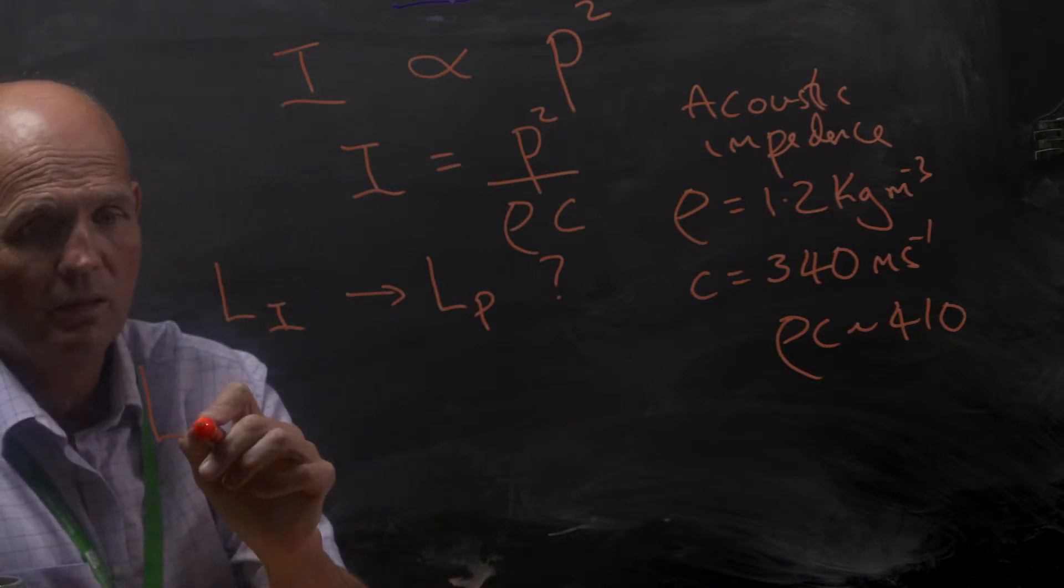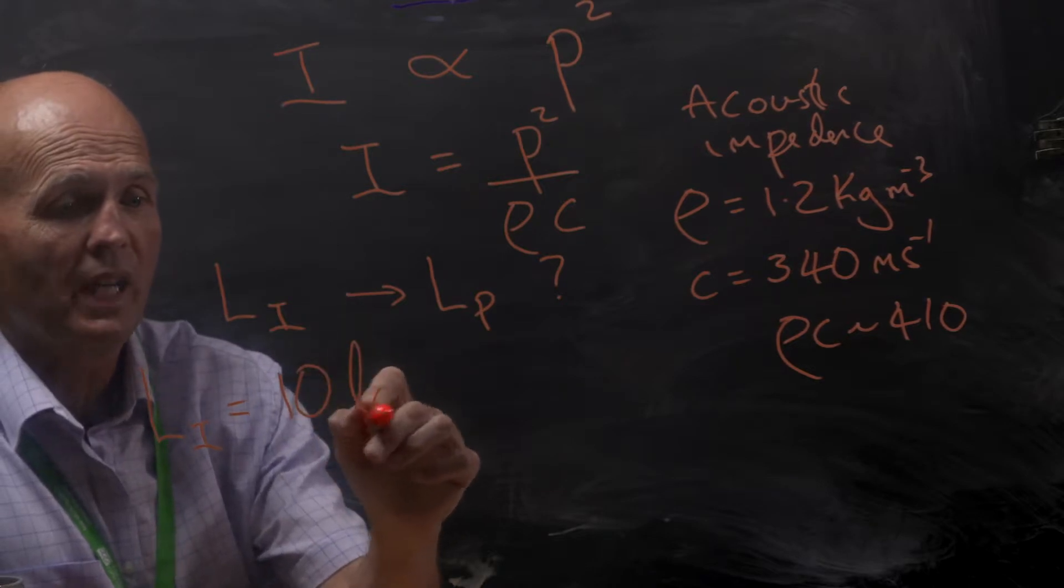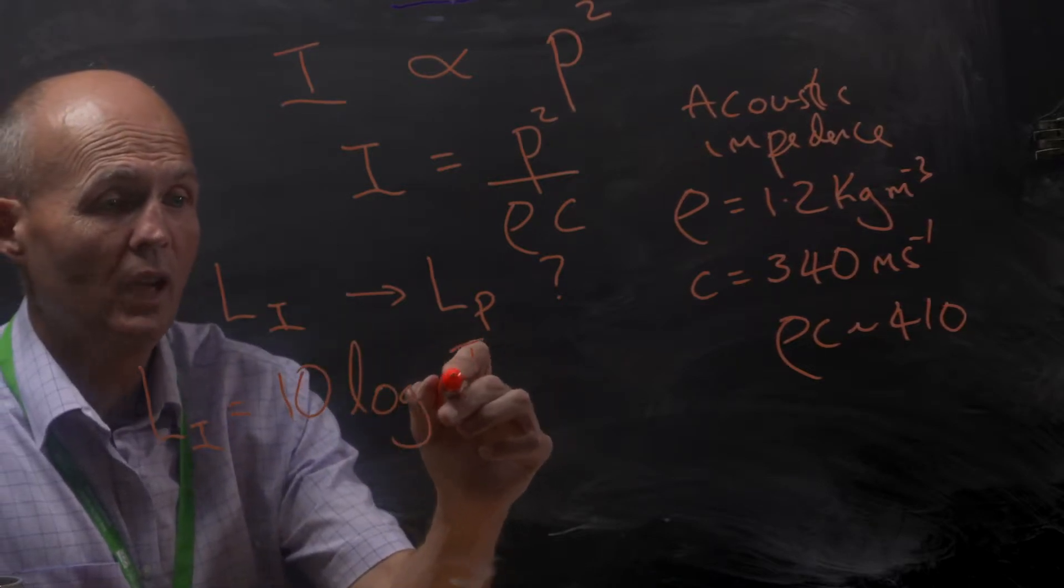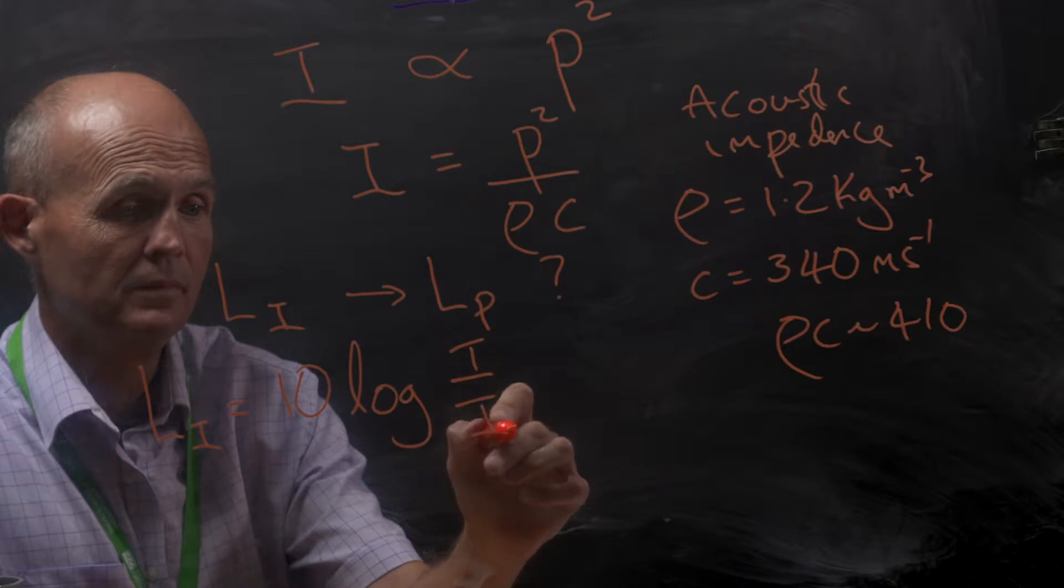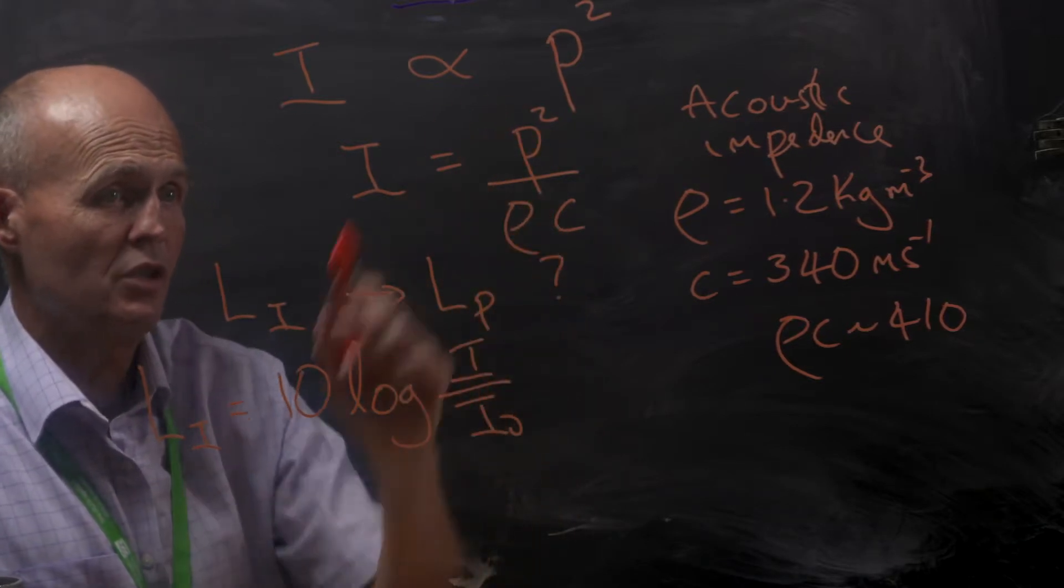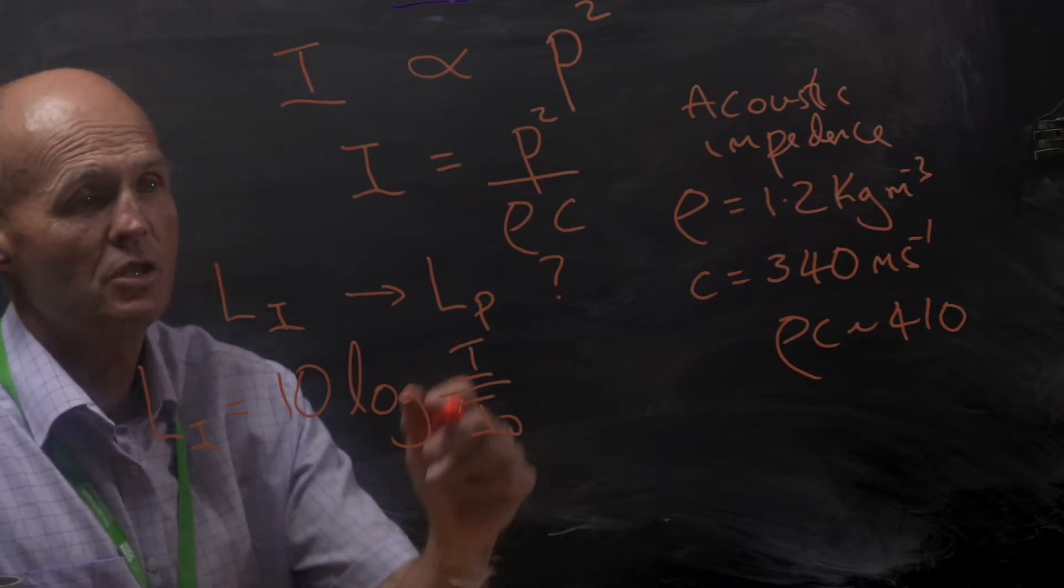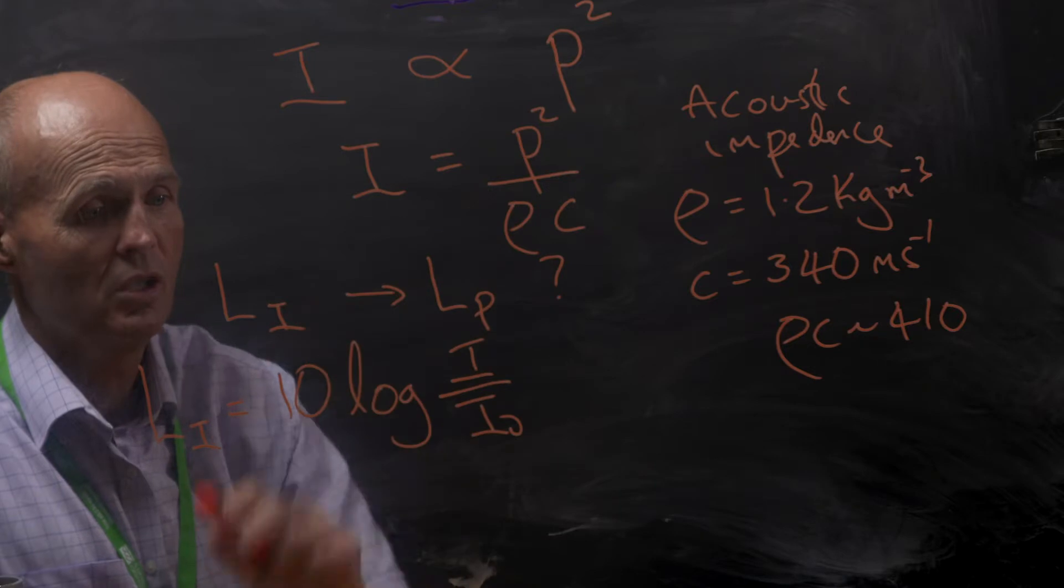Well, let's first of all look at sound intensity level. That's given by 10 log of I over I naught. We know that intensity is pressure squared over rho c. So what we will do is substitute this relationship here into this formula here.